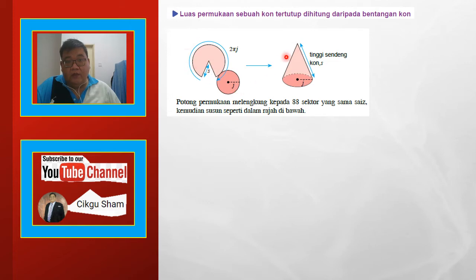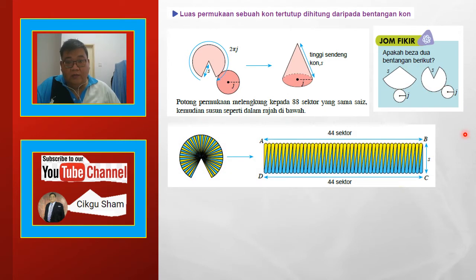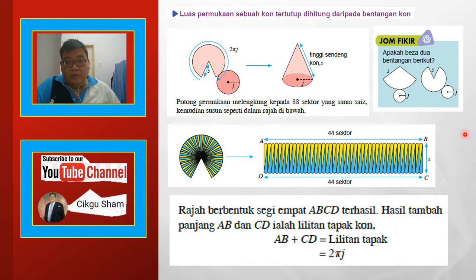Ini bentangan cone, ini cone. Ada jari dan ada tinggi sendeng s. Apa beza 2 bentangan berikut? Cuba tengok apa beza dia. Jam berbentuk segi 4, A, B, C, D — terhasil setambah panjang A, B dan C, D ialah lilitan tambah cone. A, B tambah C, D adalah lilitan tambah cone, so sama dengan 2πj.